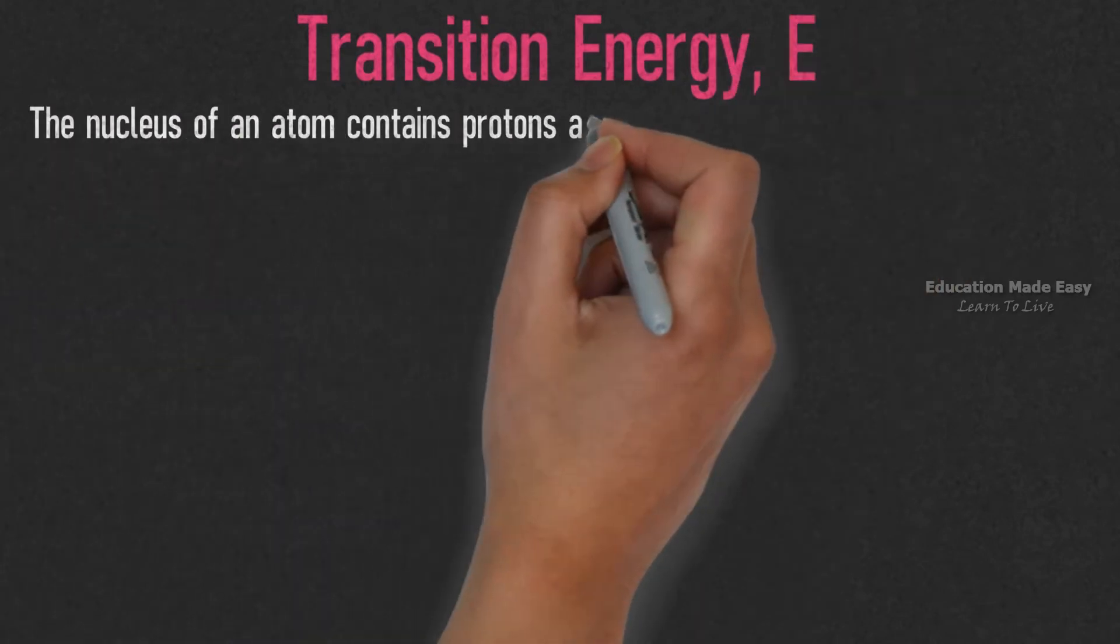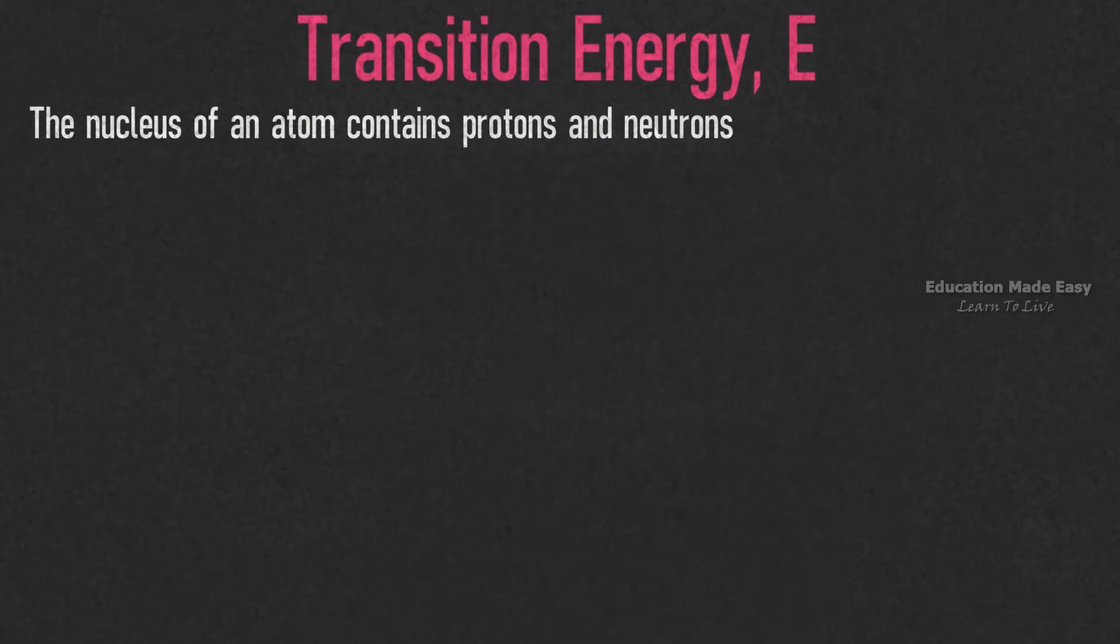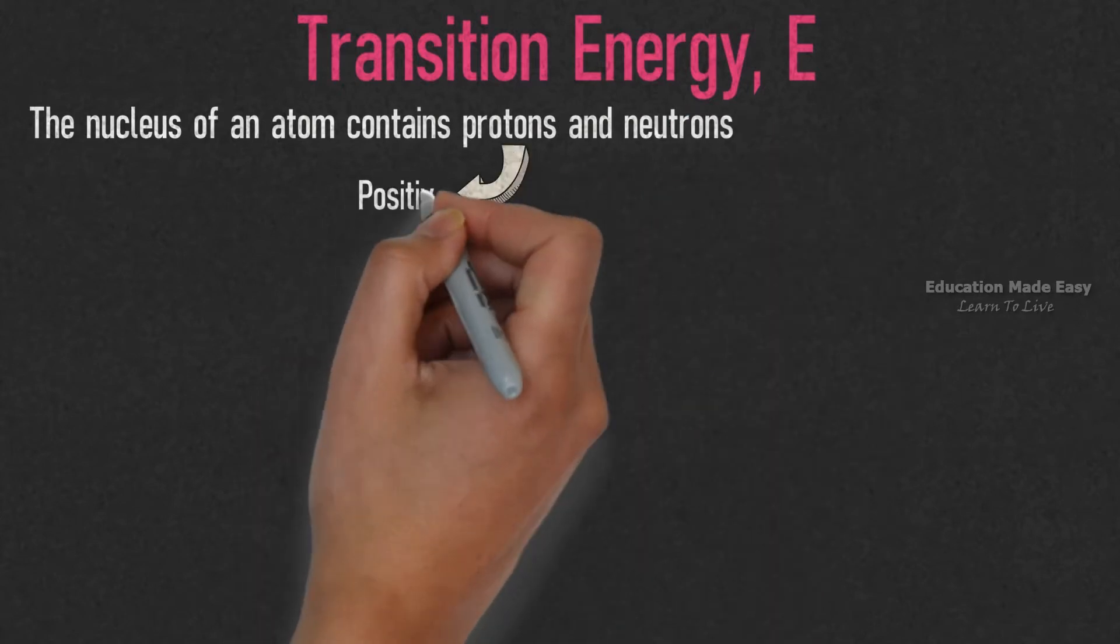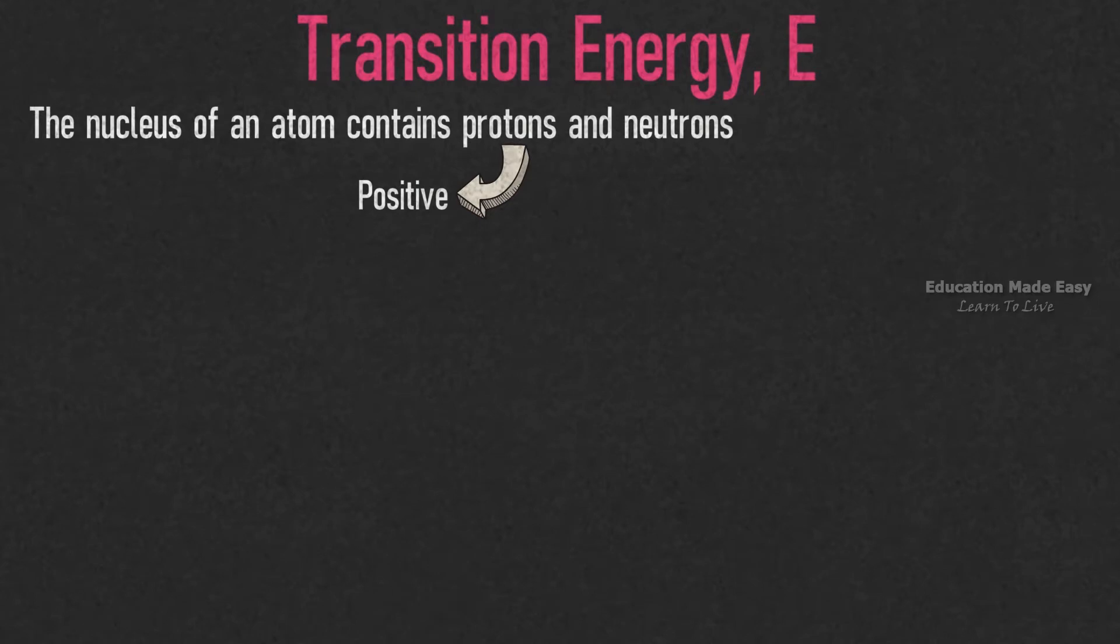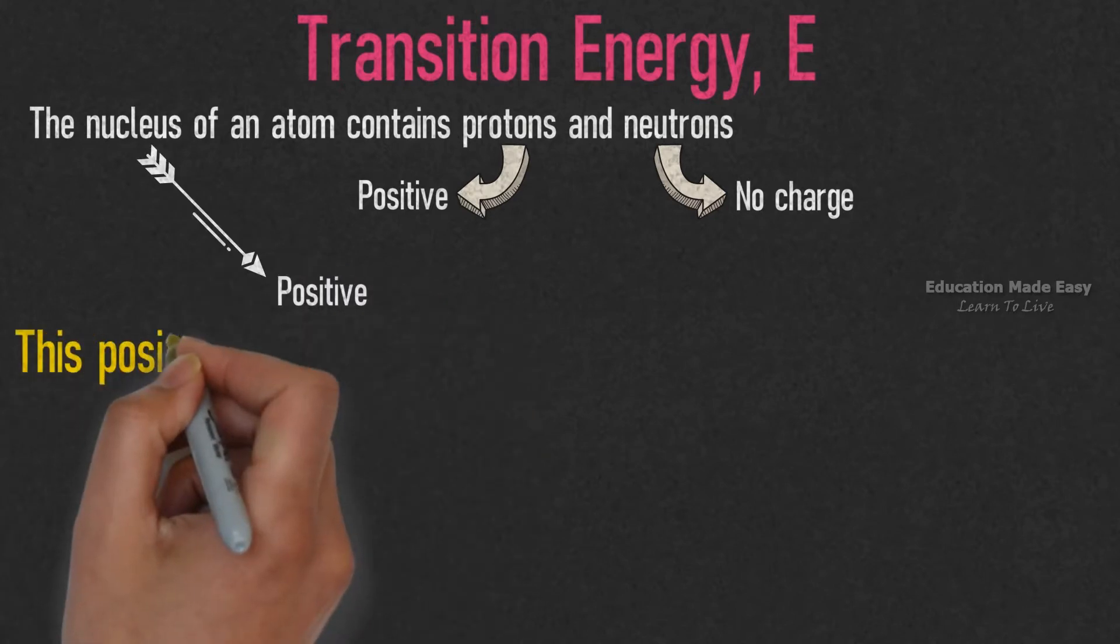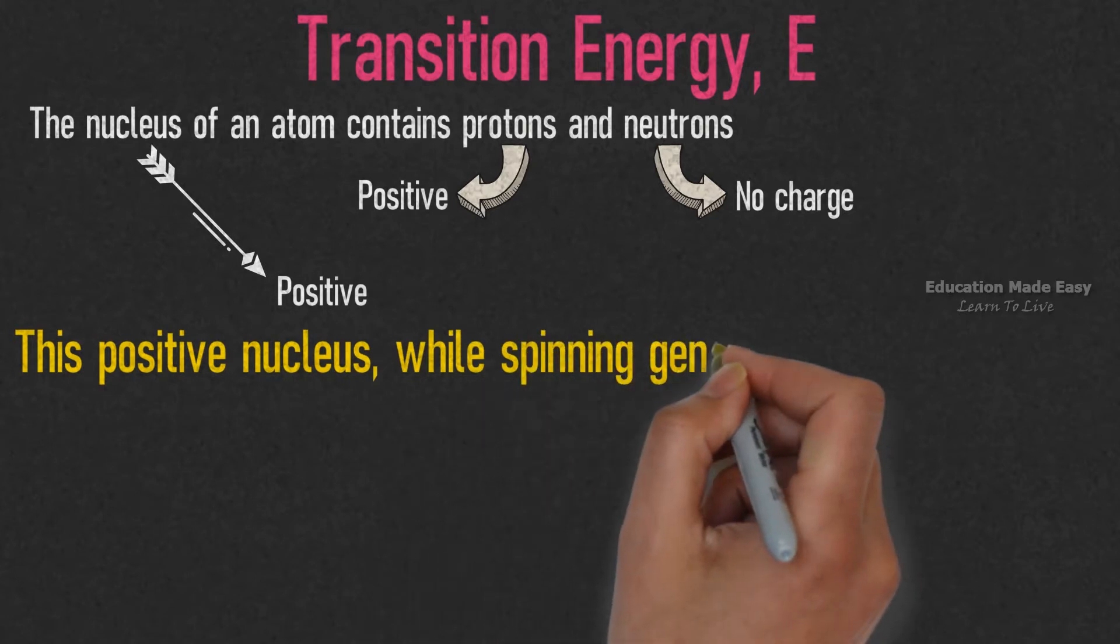We also know that protons are positive charges and neutrons do not have any charges. The nucleus will have a positive charge in total. This positive charged nucleus, while spinning, generates a magnetic field around it.